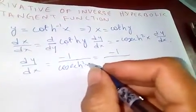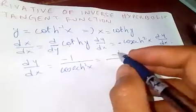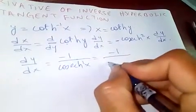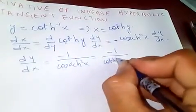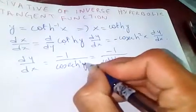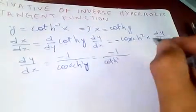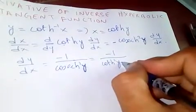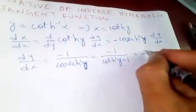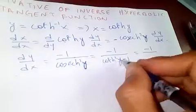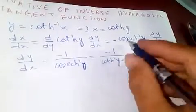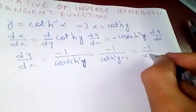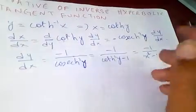In this coth hyperbolic squared, this is y, this is also y. Now this is y minus one, which is minus one over coth is x squared minus one.